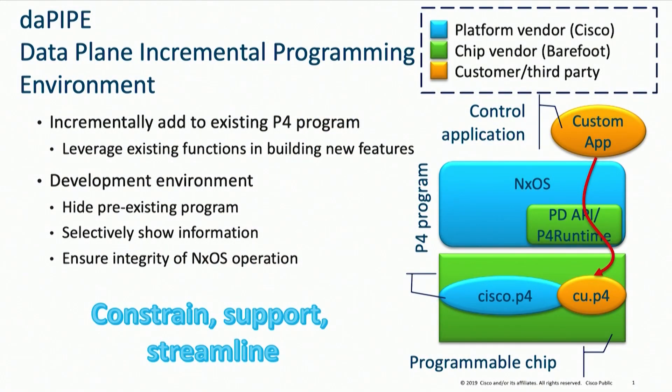The network operating system controls the pre-existing functionalities. The idea is you can add your functionalities leveraging the pre-existing ones so that you don't have to reimplement them. The development environment hides the pre-existing program, which reduces complexity and hides proprietary features, showing only information needed by the incremental developer. At the same time, it limits what the incremental developer can write so it ensures the integrity of the pre-existing program. In the demo, I will show you the environment and an example use case.